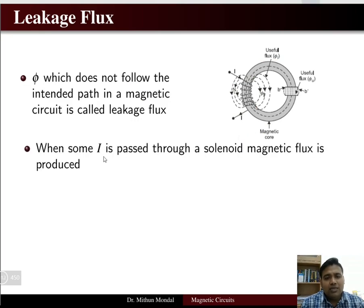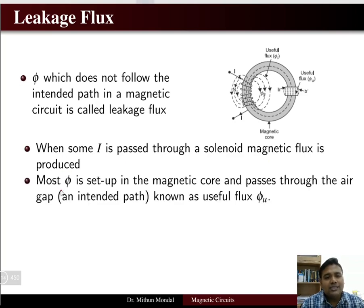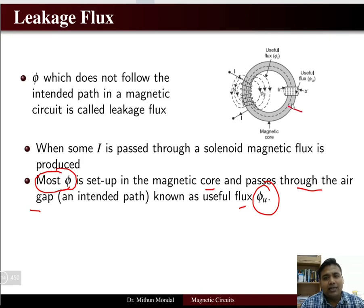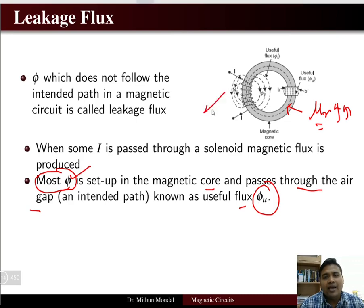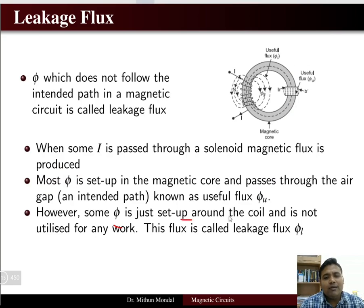When current is passed through the solenoid, magnetic flux is produced. Most flux is set up in the magnetic core and passes through the air gap — this is known as the useful flux, phi_u. Most flux is concentrated in the magnetic circuit because the relative permeability of the core is quite high compared to the air gap. Therefore, only a small amount of flux flows through the air, and that is known as the leakage flux.